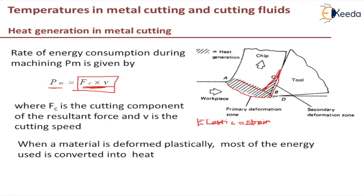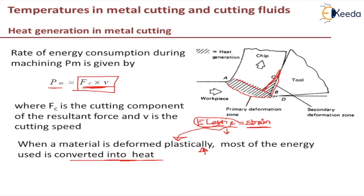Once the material crosses elastic deformation and enters into plastic deformation, there is no strain energy stored — all the energy is converted into heat. In metal cutting, the material is subjected to extremely high strains and elastic deformation forms a very small proportion of total deformation. Almost only plastic deformation is taking place, so we neglect elastic deformation and assume that almost all energy is converted into heat.